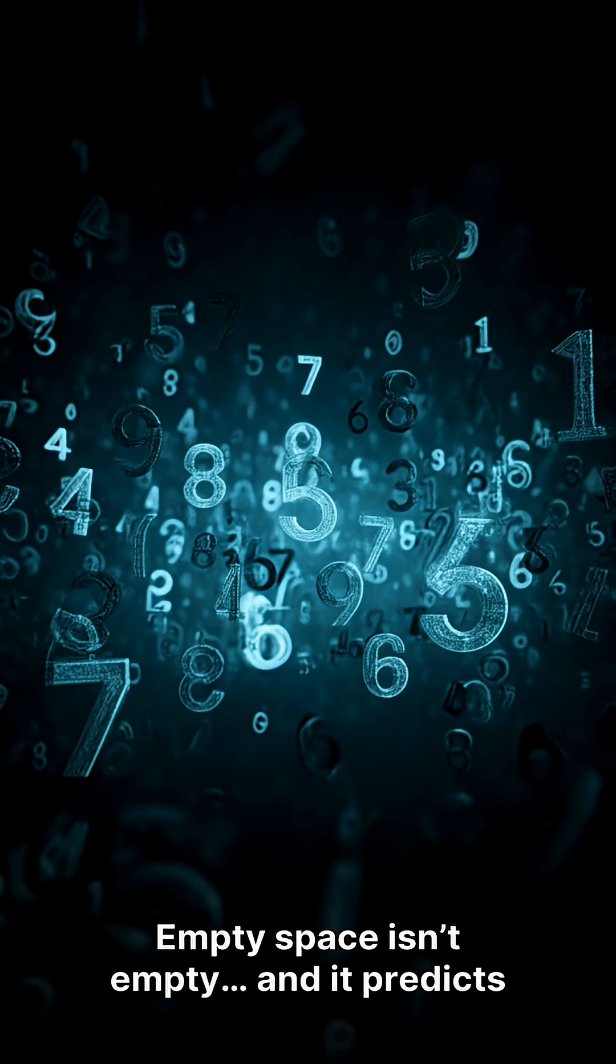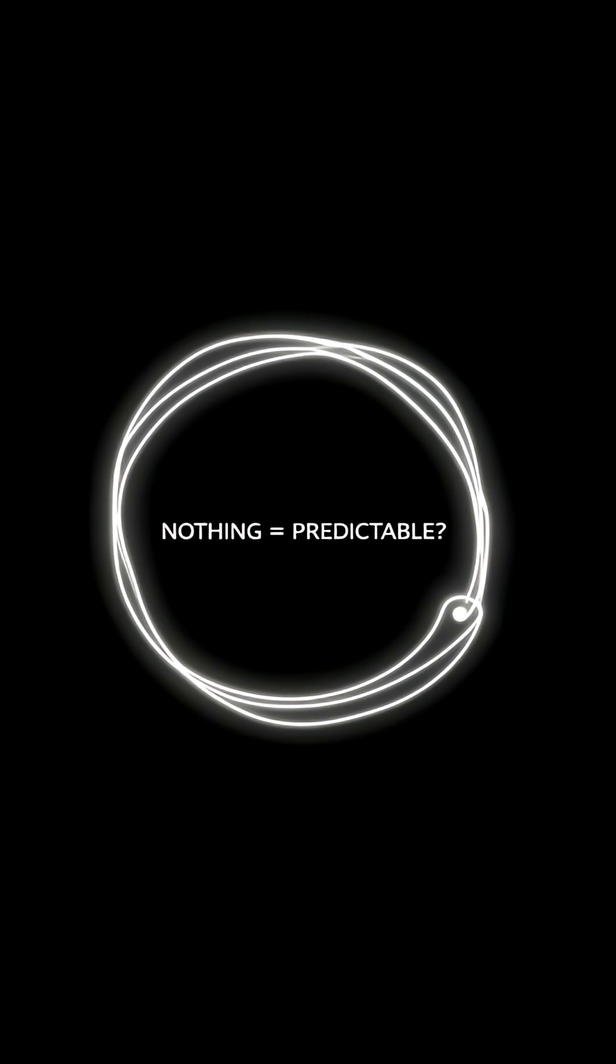Empty space isn't empty, and it predicts a real number in a lab. So how can nothing change a measurement and still be predictable?